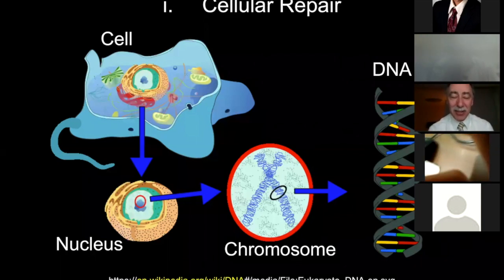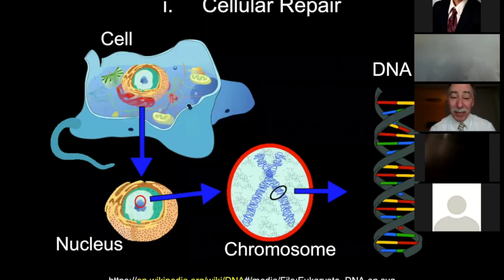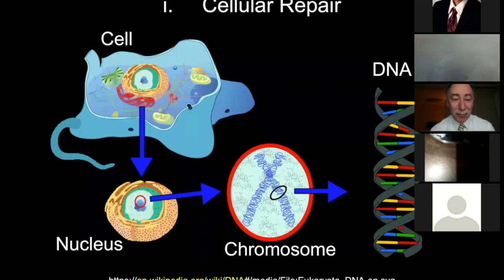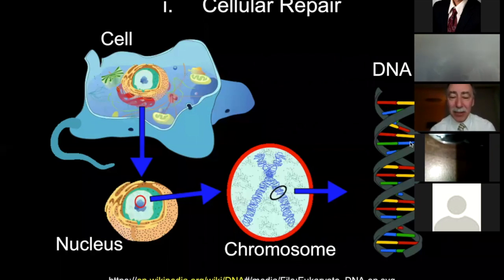If the DNA is damaged, a muscle cell may still function as a muscle cell and a brain cell as a brain cell. But when the cell tries to divide, the damage will be manifest.